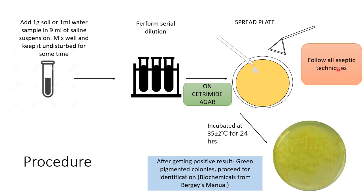Perform spread plate under aseptic conditions — disinfect your table, work between Bunsen burners, flame your spreader before using it on sterile media agar. These small techniques ensure contamination is avoided. After performing spread plate technique, incubate your plate at 35 to 37 degrees Celsius for 24 hours. You can see good isolation with greenish to yellowish-green colonies, and even the media has pigment diffused into it, indicating a positive result of Pseudomonas. Proceed further for identification by referring to Bergey's manual for biochemicals.